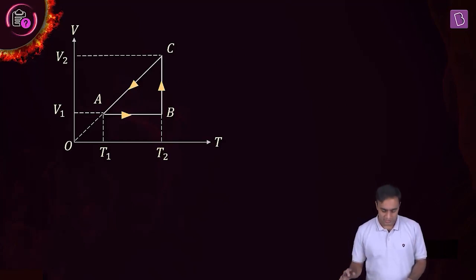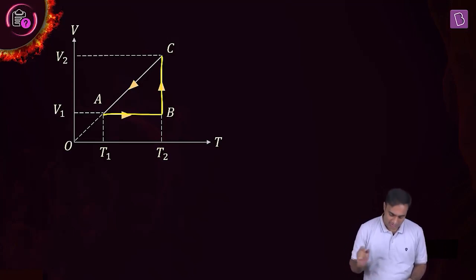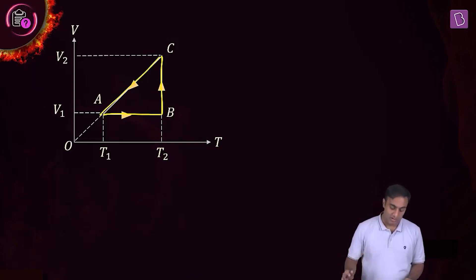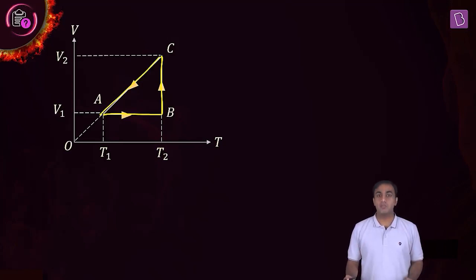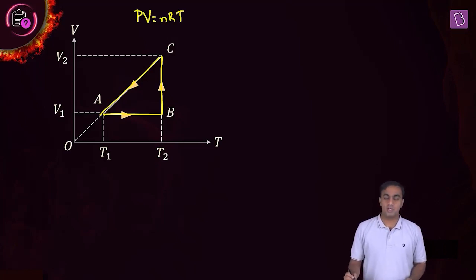If you notice carefully, you will see that in process AB, volume remains constant — so it is an isochoric process. In process BC, the temperature remains the same, so it is an isothermal process. In process CA, volume is proportional to temperature, which is possible only when pressure is kept constant. From the ideal gas equation PV = nRT, V is proportional to T only when pressure is constant.